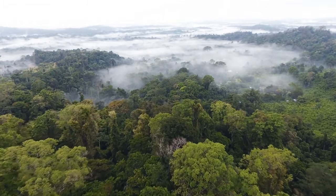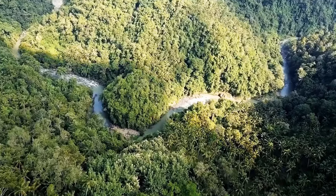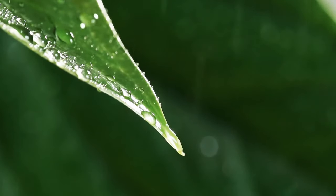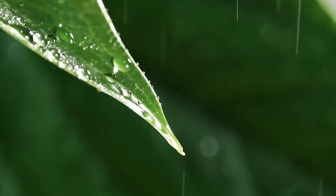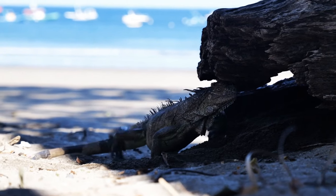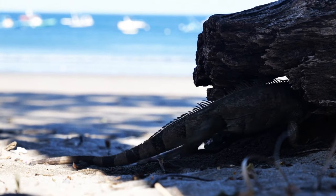In this scenario, herbivore dinosaurs would have likely thrived. But they would have started to look a bit different. Plants started growing during that time period were not very rich in nutrients. This means that dinosaurs would have probably shrunk in size, not having the necessary energy to grow all the way to their full size.